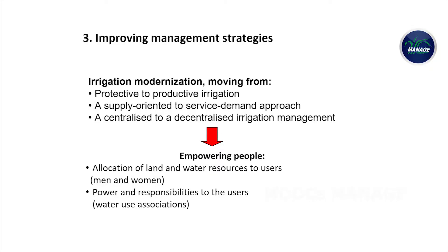The third important water management strategy is improving management approaches for water utilization. The focus is shifted from protective irrigation methods to productive irrigation systems, and from supply-oriented to service-oriented demand. We must focus more on decentralized water management approaches wherein decision making is left with the men and women involved in agriculture and water utilization. This will also give power to water users associations to make use of water on a collective basis.